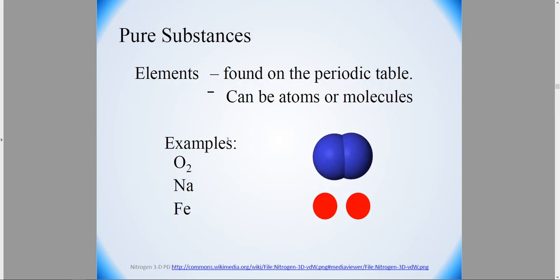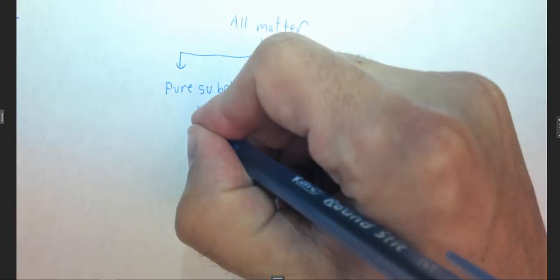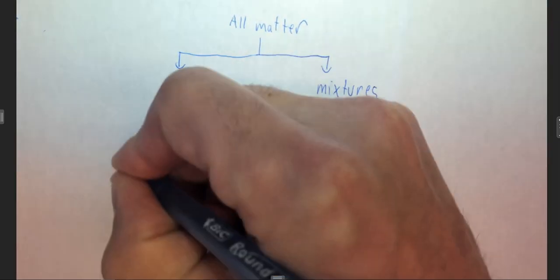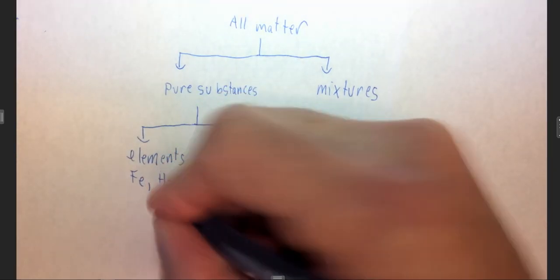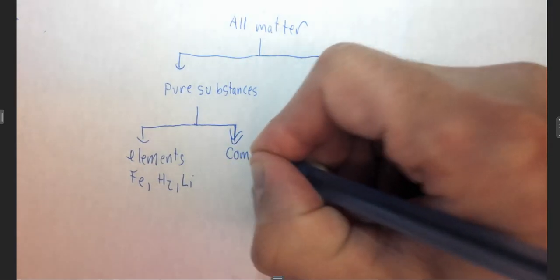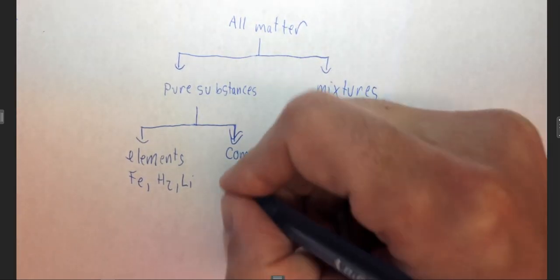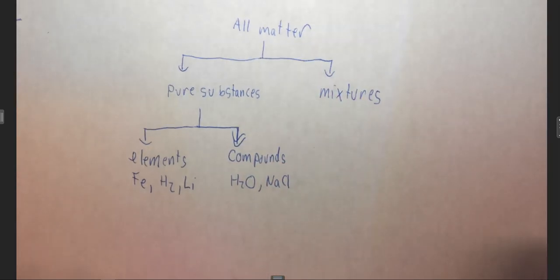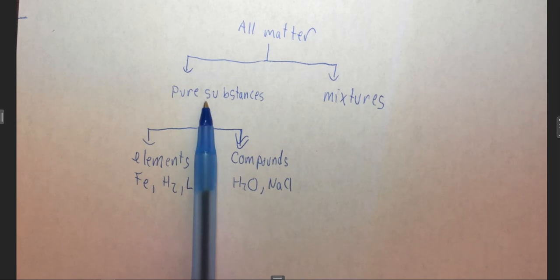So elements, again, are found on the periodic table, and compounds are two or more elements that have come together. So if we continue our flowchart, pure substances can be thought of as two different things: elements, such as iron or hydrogen which happens to be diatomic, or lithium or any of the other ones, or compounds, which is two or more elements mixed together, which would be something like water or sodium chloride or any of the infinite number of compounds that there are. So all matter can be subcategorized into pure substances, and pure substances can be subcategorized into elements and compounds.